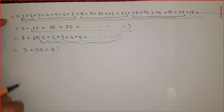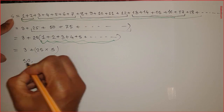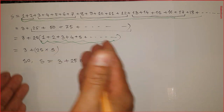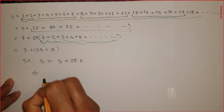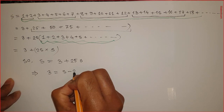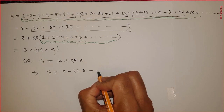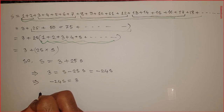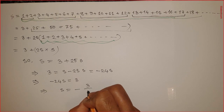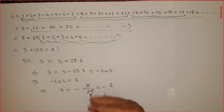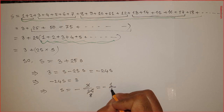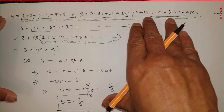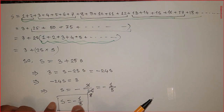So I can replace this part by S, making the statement: S equals 3 plus 25S. Rearranging: 3 equals S minus 25S, so the right-hand side becomes minus 24S, meaning minus 24S equals 3, or S equals minus 3 over 24. Simplifying, 3 and 24 cancel to give 8, so S equals minus 1 over 8. This second method also proves that this series equals minus 1 over 8.